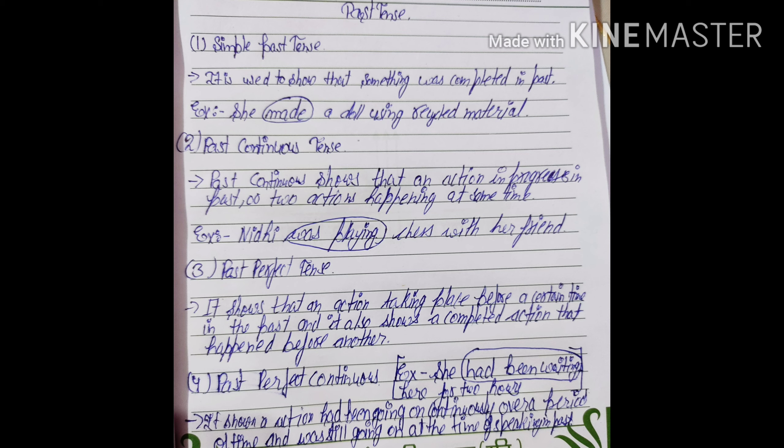Now, second — past continuous tense. Past continuous tense shows that an action is in progress in the past, or two actions happening at the same time. So, for example: 'Nidhi was playing chess with her friends.' Here, 'was playing' is showing past continuous tense.